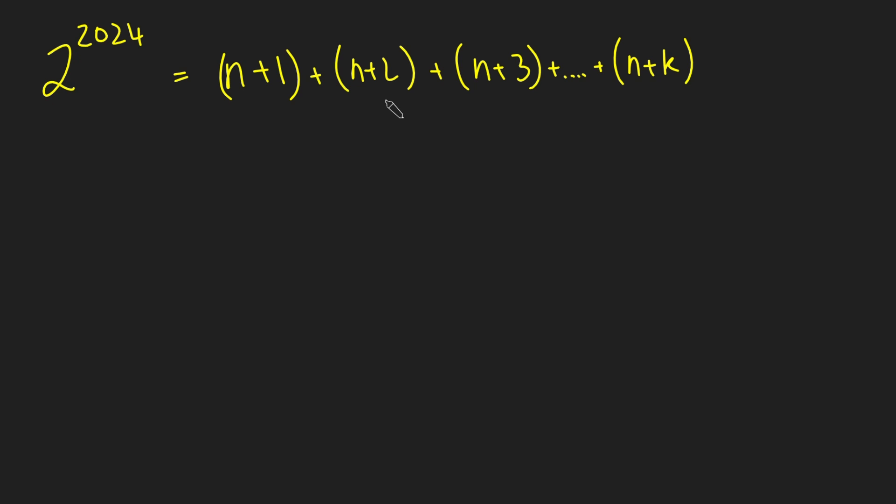The answer, in fact, is no, it is impossible. Let's see why. We're going to actually do this by contradiction, and what's quite interesting is it doesn't actually matter that this is 2 to the 2024, it can in fact be any power of 2 we want.